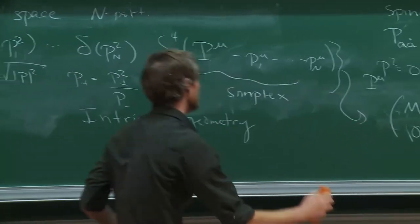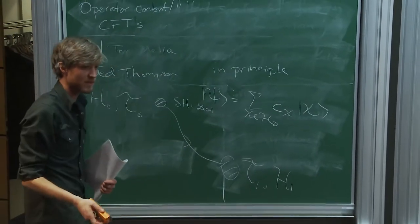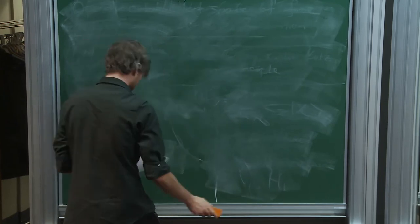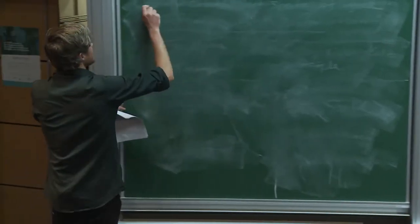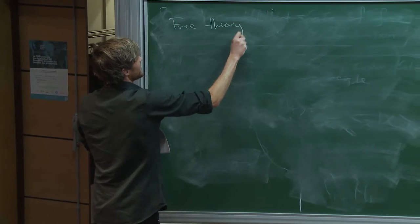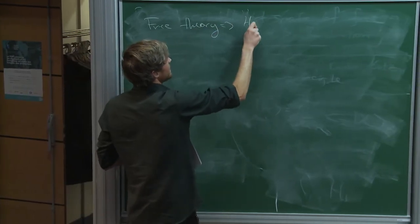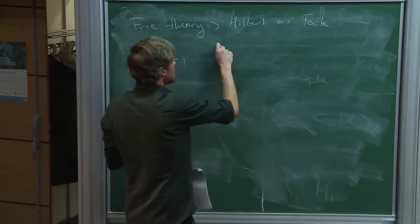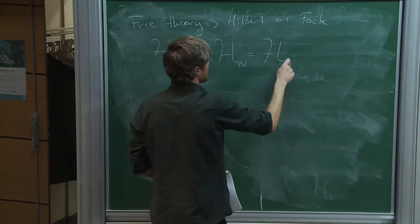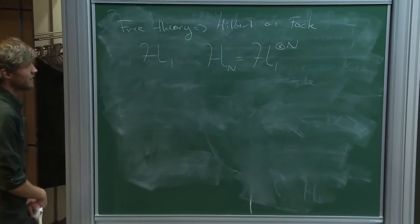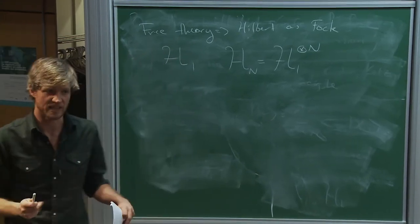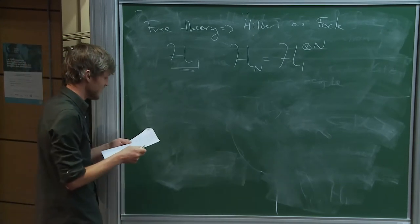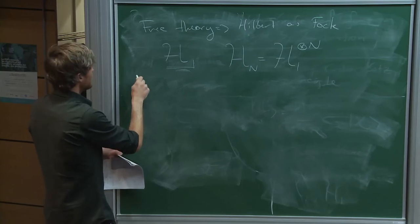Since this is a free theory, I get to construct the Hilbert space as a Fock space. If H1 denotes the one-particle Hilbert space, the n-particle Hilbert space is just given by tensor products of H1, with appropriate symmetrization or anti-symmetrization based on statistics. The one-particle Hilbert space H1 is a very key ingredient, so let's spend some time with it.